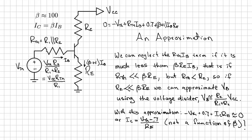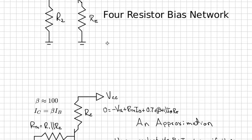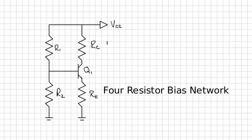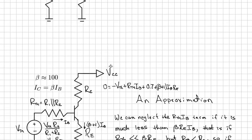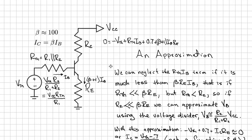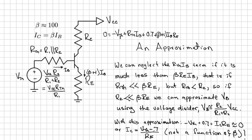And that voltage is very easy to calculate from the original circuit here just using a voltage divider. That's how we got VTH in the first place. So you can see VTH then becomes the base voltage.